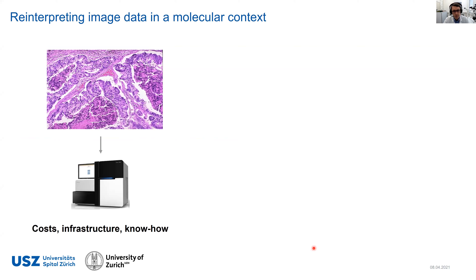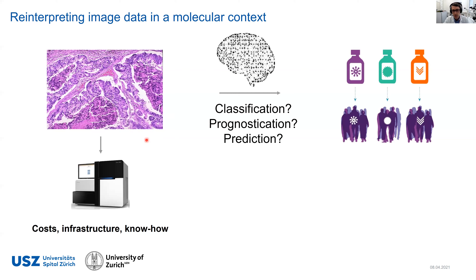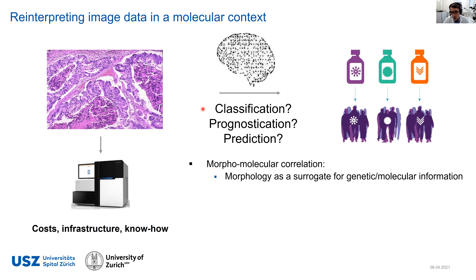The current state of the art means we already have histology slides generated around the world at a high standard using standard H&E sections in a diagnostic workup. However, accessing the genomic information — including transcriptional or methylation data — generates significant costs, needs infrastructure, and needs know-how. This is currently a bottleneck that we could overcome if we directly use existing images to correlate tissue morphology with specific profiles that have value for disease classification, as well as the development of prognostic and predictive indicators. For example, we could use morphological signatures as a surrogate for specific genetic or molecular genotypes.